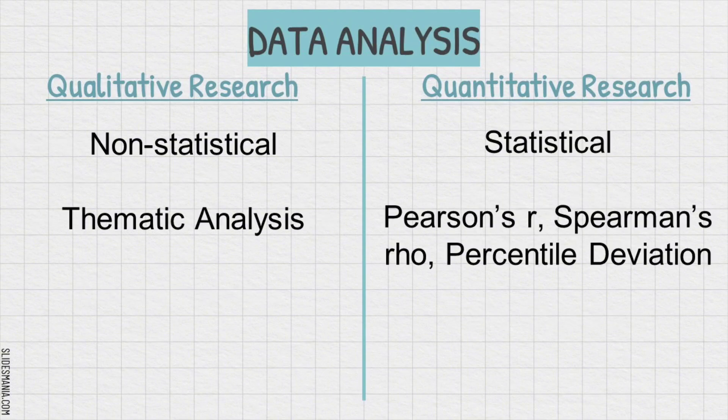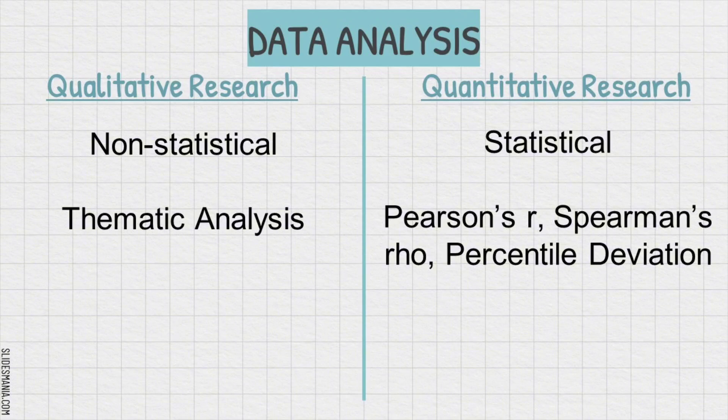Data analysis. In qualitative research, we are non-statistical — that's why we anchor thematic analysis. Whereas in quantitative research, we are statistical — that's why we use statistical methods. From data collected in qualitative research, we categorize them according to themes and present them through charts with paragraphs. Whereas from collected data in quantitative research, we subject them to statistical treatment using statistical tools, and they are presented through tables with data.